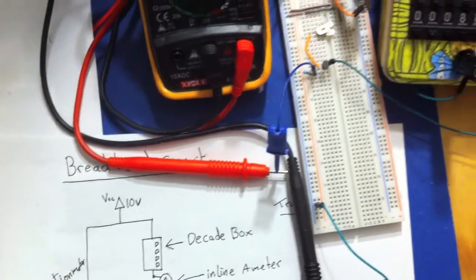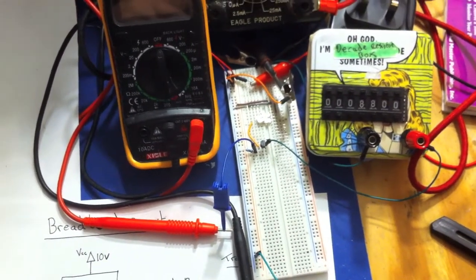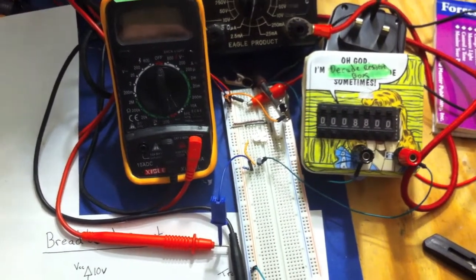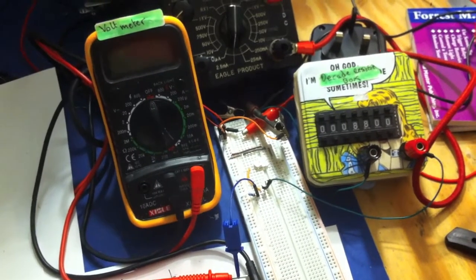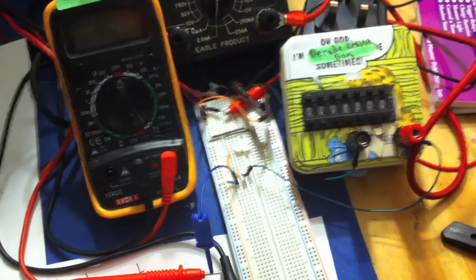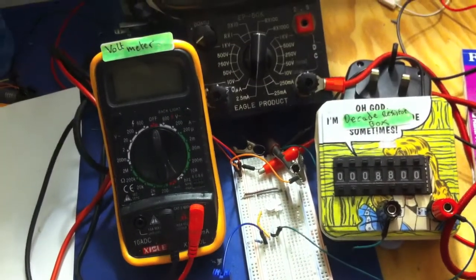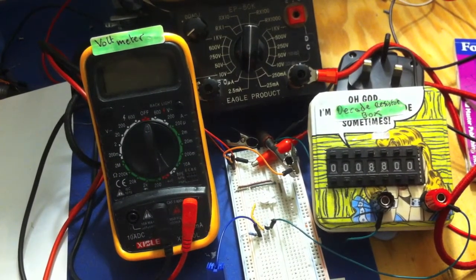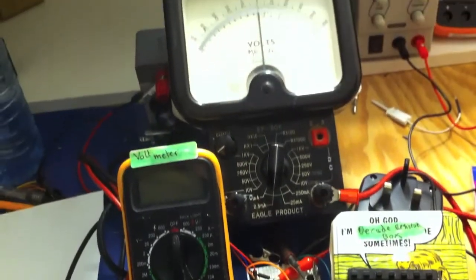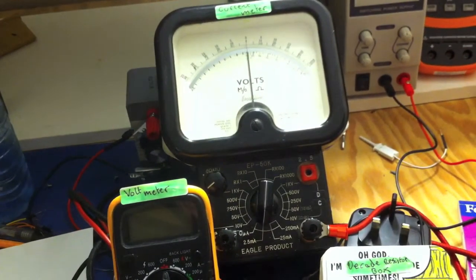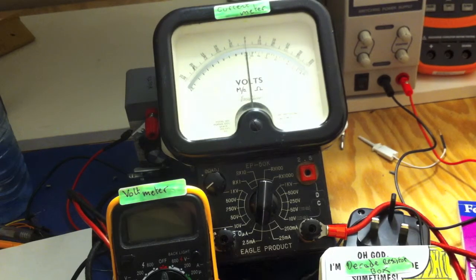And we have the decade box there, which is going to give us our changes in resistance at the top of the collector voltage. Then we have a voltmeter which is going to show us the voltage across the emitter resistor. And then we have a current meter, although that's showing volts on there, that's set up to measure current.